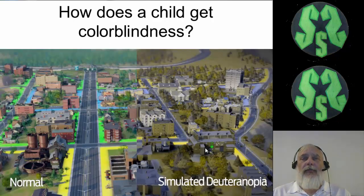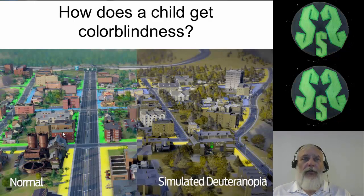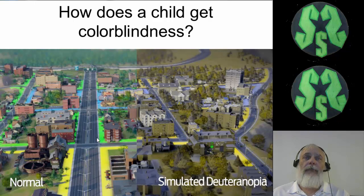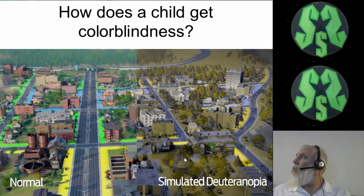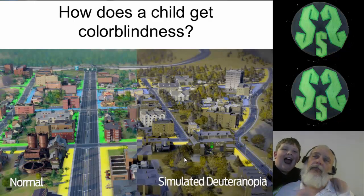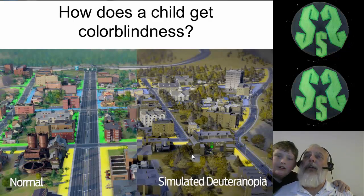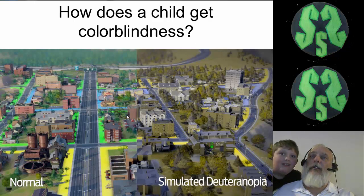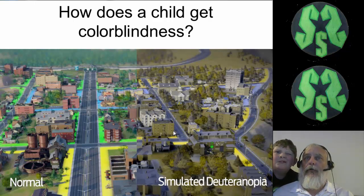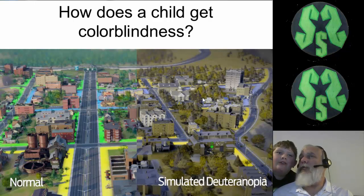Color blindness is one that's fairly common. On the left is what normal color sight looks like — blue, yellow, green. Someone who is colorblind, like Y-Guy who is colorblind, may see something that looks quite different. Can you tell these are two different photos? Do they look the same to you? They look the same to Y-Guy because he's colorblind.